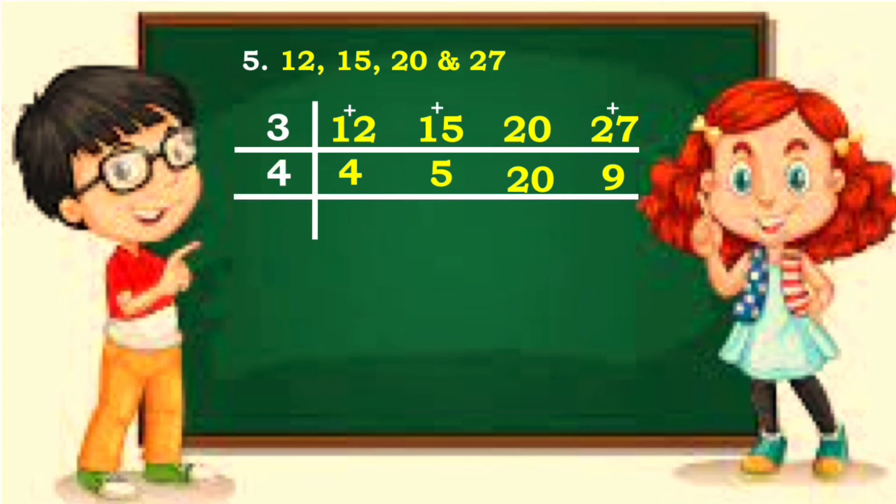4 divided by 4 is 1. Rewrite 5. 20 divided by 4 is 5. And rewrite 9. Last divisor is 5. Rewrite 1. 5 divided by 5 is 1.